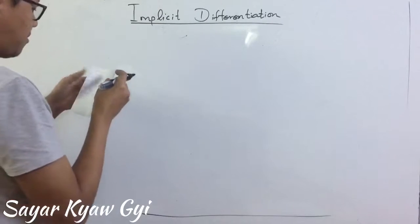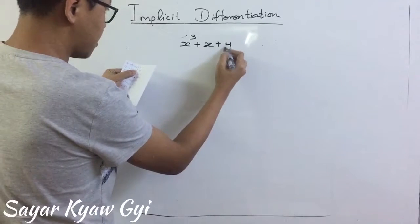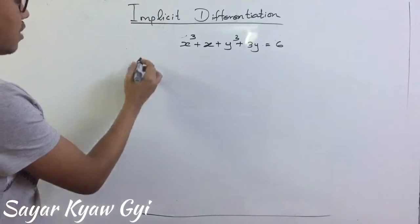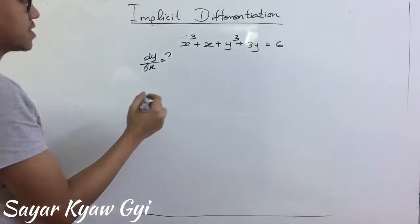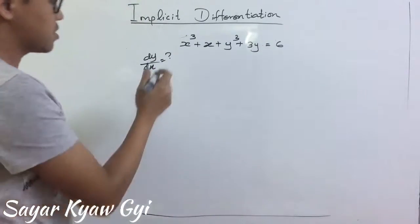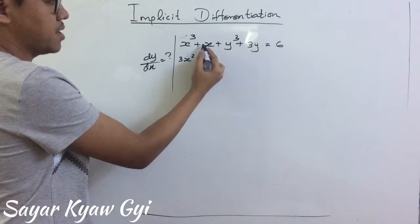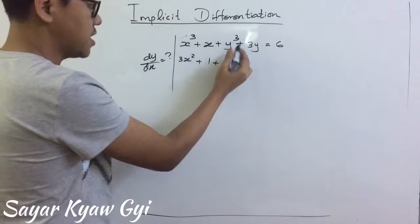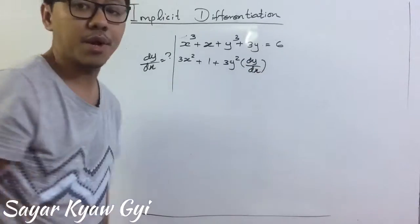The first example I want to explain is x cubed plus x plus y cubed plus 3y equal to 6. We are going to find dy by dx. The first step is we are going to differentiate every term with respect to x. So this one would be 3x squared, and this one would be 1, plus 1. And this one, if you differentiate it, 3y squared and dy by dx, because we are doing it with respect to x.